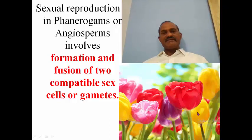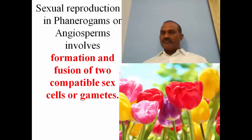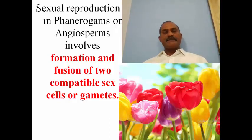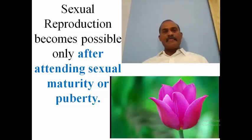As far as sexual reproduction is concerned in phanerogams or angiosperms, it involves the formation and fusion of two compatible sex cells, generally called gametes. That is a very important aspect of sexual reproduction. It involves two parents — one male and the other female — and both parents produce highly specialized reproductive cells, generally referred to as gametes or sex cells.